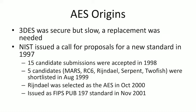The National Institute of Standards and Technology (NIST) issued a call for proposals for a new cipher standard in 1997 that would be secure and fast in various types of hardware and software. Fifteen candidate submissions were accepted in June 1998, and out of these, five were shortlisted in 1999: MARS, RC6, Rijndael, Serpent, and Twofish.